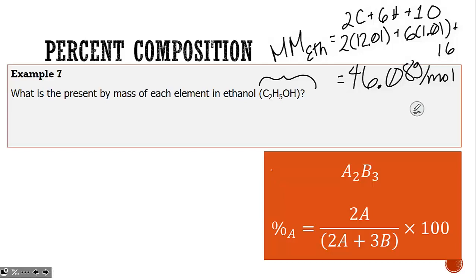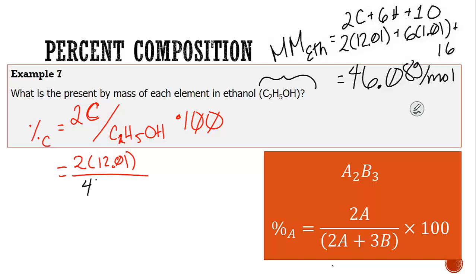To find the percent carbon, we take the molar mass of carbon and divide by the molar mass of ethanol, then multiply by 100. However, there are two carbons, so we need to account for that. Two times 12.01 divided by 46.08 times 100 gives us 52.1% carbon.